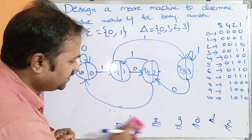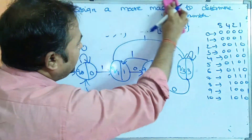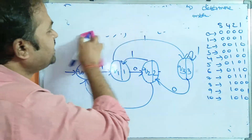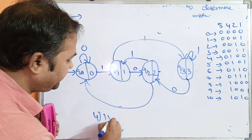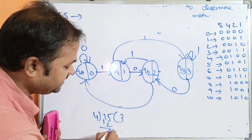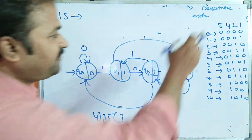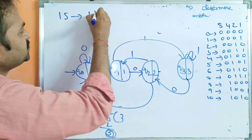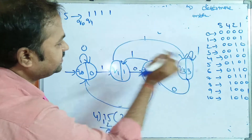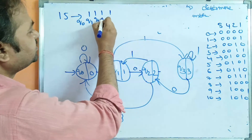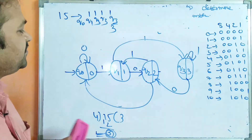This is the Moore machine for solving the problem. Let us verify by applying input string 15. 15 modulo 4 is 3, so we expect Q3. 15 in binary is 1111. Starting at Q0: Q0 on 1 → Q1, Q1 on 1 → Q3, Q3 on 1 → Q3, Q3 on 1 → Q3. Output of Q3 is 3. Correct!